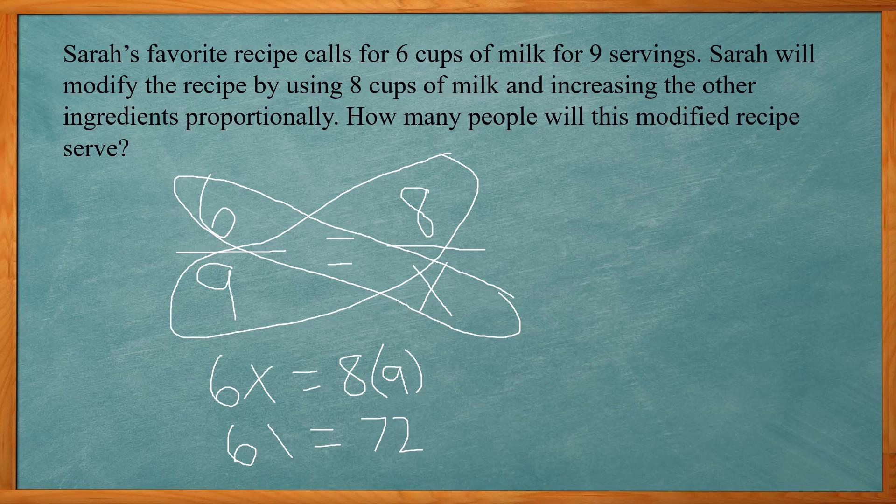So now we have 6x equals 72. I'm going to get the x by itself, divide both sides by 6, so then x equals 12. So the new recipe requires 8 cups of milk. Proportionally that will serve 12 people now instead of 9.